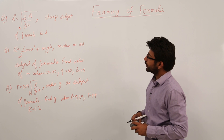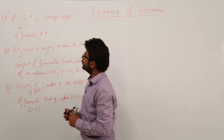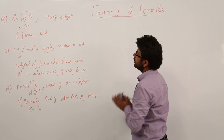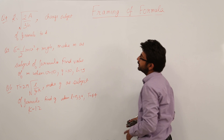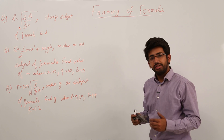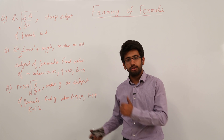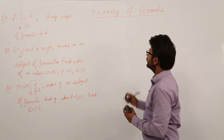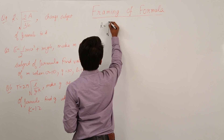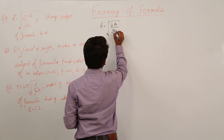Let us solve our fourth question: r is equal to under root of 2a divided by 3h. We have to change the subject of the formula to h, meaning we have to keep h on one side and all the other variables on the other side of the equality sign.